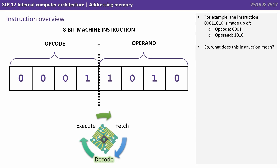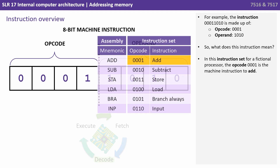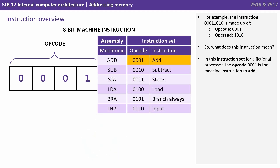For example, the instruction 0 0 0 1 1 0 1 0 is made up of the opcode — the first four bits — and the operand — the last four bits. In this instruction set for a fictional processor the opcode 0 0 0 1 is the machine instruction to add.